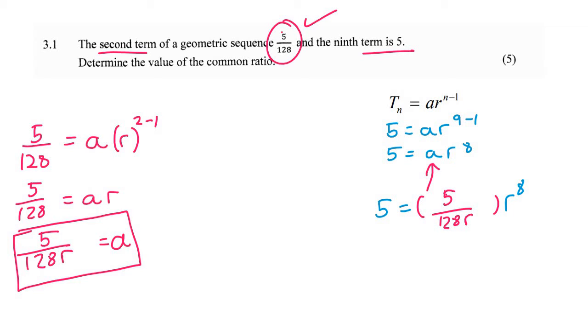So what I would do now is multiply these two together, which gives us 5R^8 over 128R. Now the R^8 and the R - when we divide by R - gives us R^7, so that's what we have now.